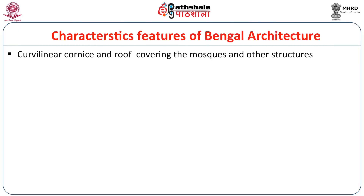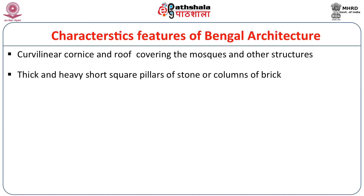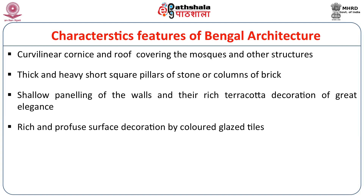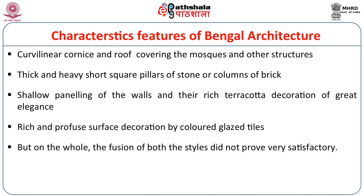Bengal architecture has a very distinct curvilinear cornice and roof covering the mosques and other structures. It followed the local tradition of bamboo huts which have a curvilinear roof, because Bengal always had heavy downpour, and to shed the extra water volume they needed a curvilinear roof rather than a flat roof. Thick and heavy short square pillars, shallow paneling of walls, and rich terracotta ornamentation are essential features. Rich surface decoration by coloured clay tiles was also introduced during the 15th century.